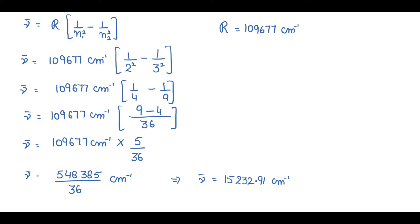Converting to scientific notation, we displace the decimal 4 digits from right to left, so the power is positive. Rounding off to 3 significant figures: 2 is less than 5, so we keep 3 as it is. The final answer is nu bar = 1.523 × 10⁴ cm⁻¹. This is the wave number corresponding to the longest wavelength transition in the Balmer series.